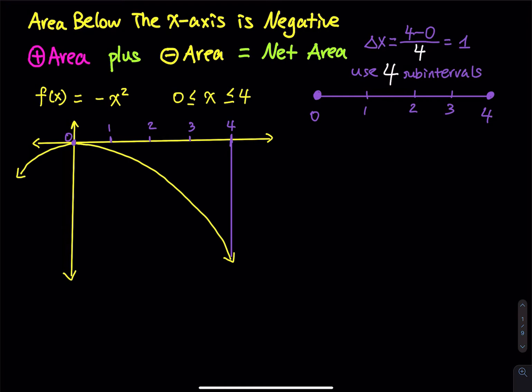I am only interested in x between 0 and 4, and in this problem I would like to divide the region into four subintervals. Delta x is equal to the upper limit minus the lower limit of the domain, which is 4 minus 0, divided by 4. You divide by 4 because I want to use 4 subintervals — that is usually determined by the person who wrote the problem.